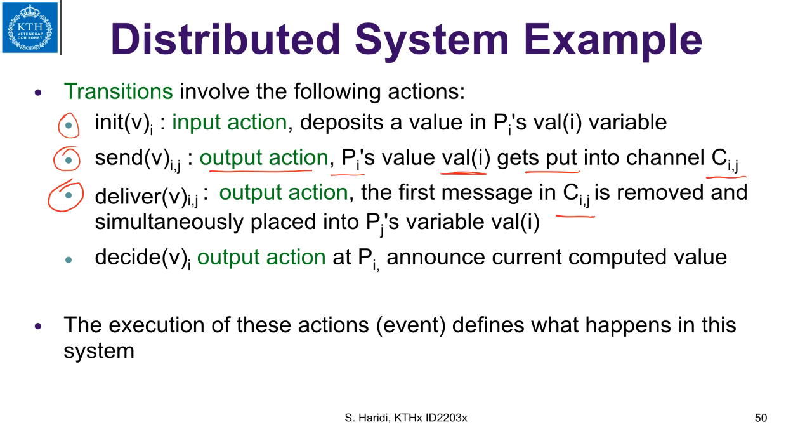Then we have the deliver output action. These are actions performed by channels. For example, deliver the value v on the channel ij is an output action. The first message in the channel cij is removed and simultaneously placed into the process pj's variable at position i in the variable val at position i.